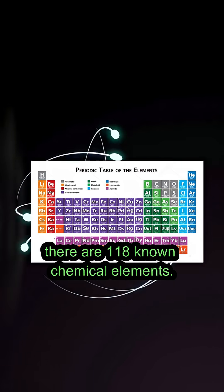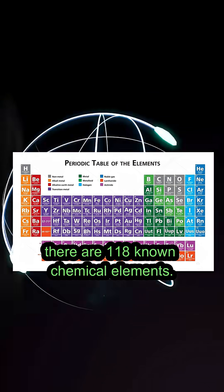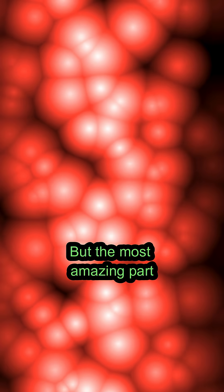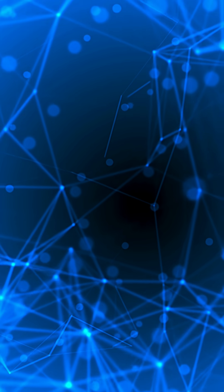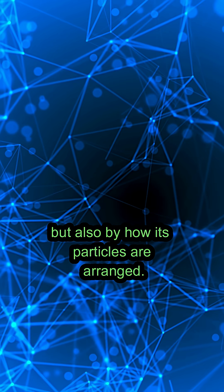In total, there are 118 known chemical elements. But the most amazing part is that the properties of a material aren't just defined by what it's made of, but also by how its particles are arranged.